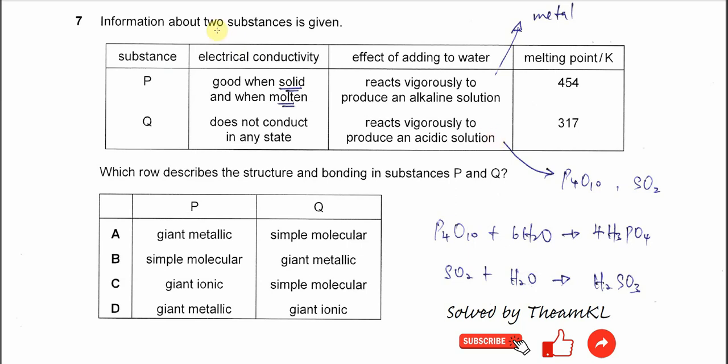Question 7. Information about two substances is given, substance P and Q. Let's start from substance P.